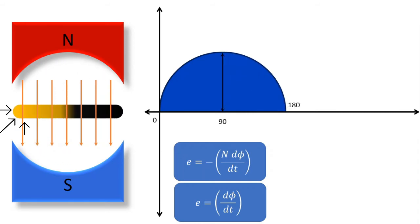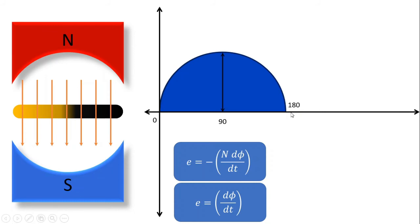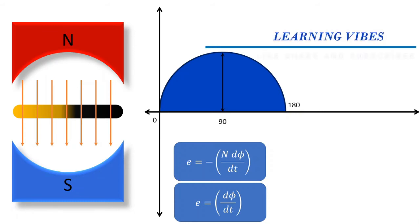If we shift this conductor further, we can observe that again the velocity of the conductor is parallel to the magnetic lines of force, and hence there is no change of flux and no induced EMF. This is how we observe the first positive half of the output induced EMF.